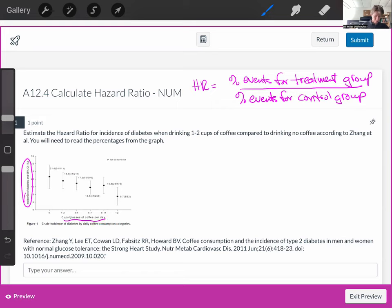We're comparing one to two cups to the control group, which is zero cups of coffee. So our hazard ratio is going to be the percent events for treatment group. So there are 18.9% incidence of diabetes in the treatment group. And we get 21.6% for our control group, which is zero cups of coffee.